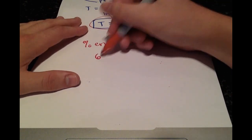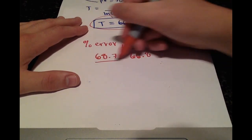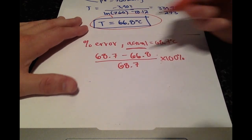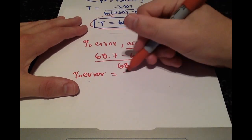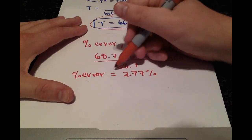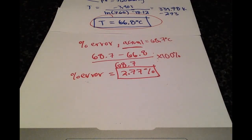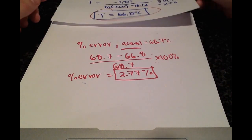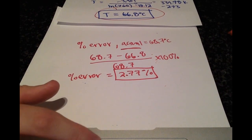Writing that out and calculating, we get a percent error of 2.77%, which is not too bad. The Clausius-Clapeyron equation arrived at a much more accurate approximation compared to our previous video. Thanks for watching, and hopefully you made some mental gains.